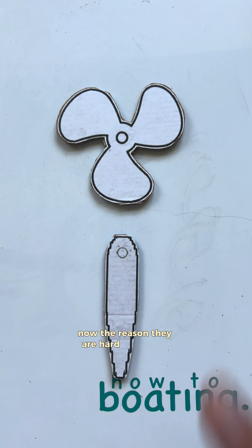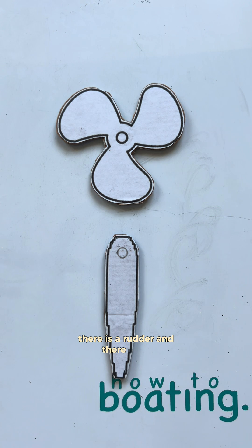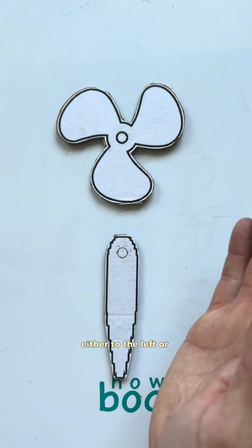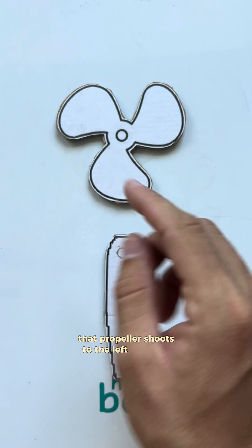Now the reason they are hard to drive is because there is a propeller, there is a rudder, and there is no directional thrust. So directional thrust is what you see in outboards, where the whole engine itself turns either to the left or to the right, and that propeller shoots to the left or to the right.